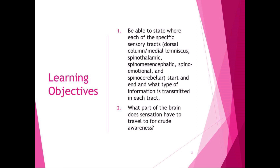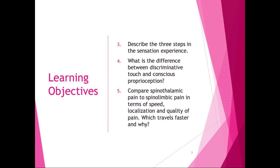You should know what part of the brain sensation must travel to for crude awareness — the thalamus, the executive system of the brain. You should be able to describe the three steps in the sensation experience: encoding information in the sensory receptors, transmitting information to the dorsal root ganglion, and projecting that information up to the thalamus and brain. You should know the difference between discriminative touch and conscious proprioception, and compare spinothalamic pain to spinal limbic pain in terms of speed, localization, and quality.